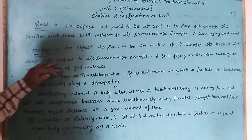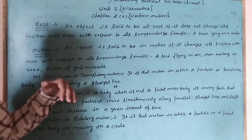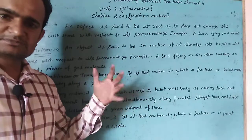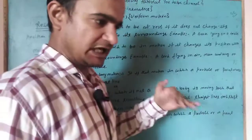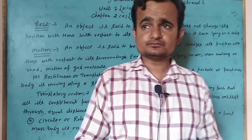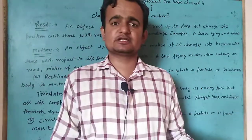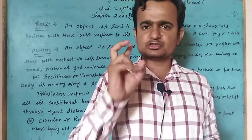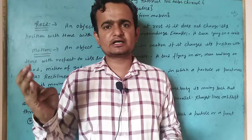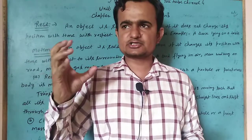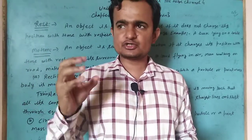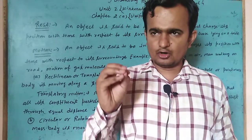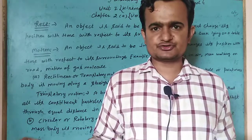जहाँ पर किसी भी object की position time के साथ change हो जाए और उसके surrounding के साथ change हो जाए, वो motion होता है। Motion को तीन types में classify किया जाता है: first है rectilinear या translatory motion, second है circular या rotatory motion, और third है vibratory motion। इन्हें step-by-step discuss करेंगे।